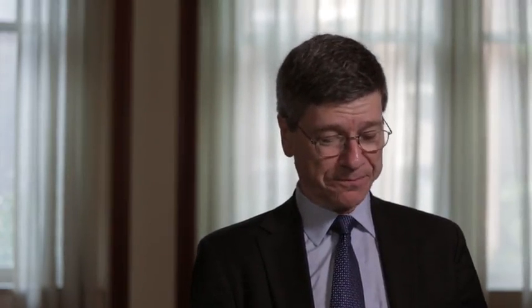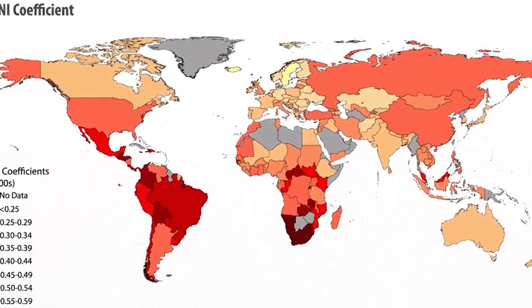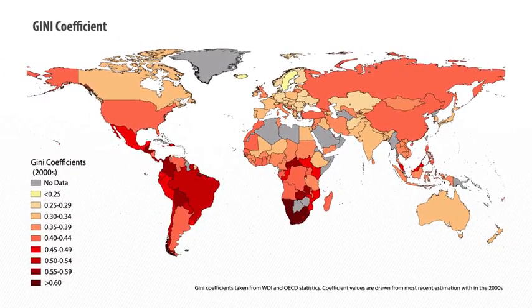Whereas countries that are much less equal, where there really is a lot of wealth at the top but then a lot of poverty alongside it, might have a Gini coefficient not of one, but around 0.5 or 0.6. And so that's the variation — it's an extremely useful measure. We can put it on a map and have a look at where inequality tends to be high and where inequality tends to be relatively low.